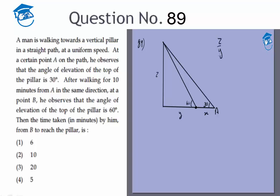So Z by Y is equal to tan 60 which is root 3, and Z by Y plus X is equal to... sorry, 1 by root 3, tan 30, which gives me Y plus X by Y is equal to... just divide by this... is equal to 3.